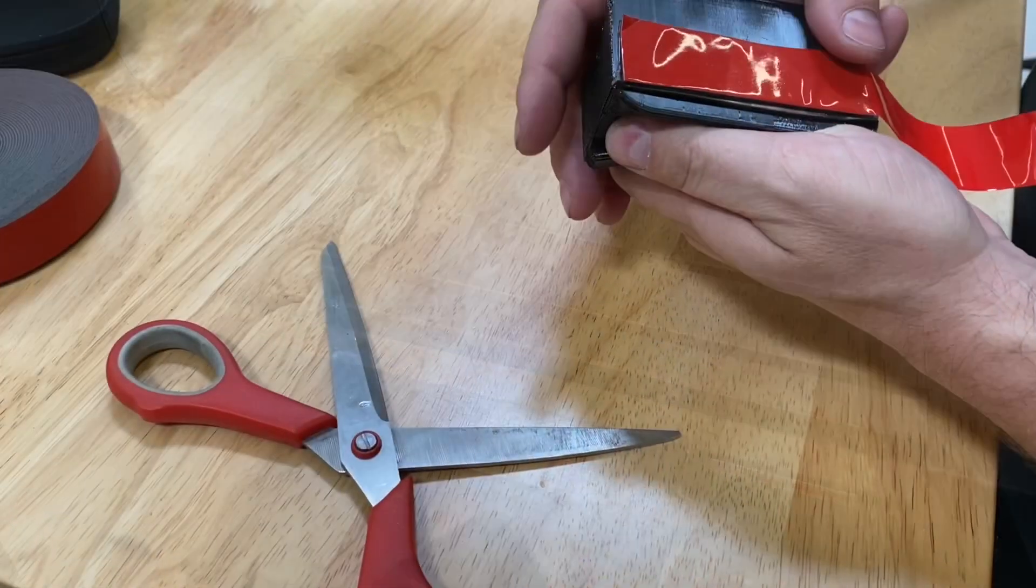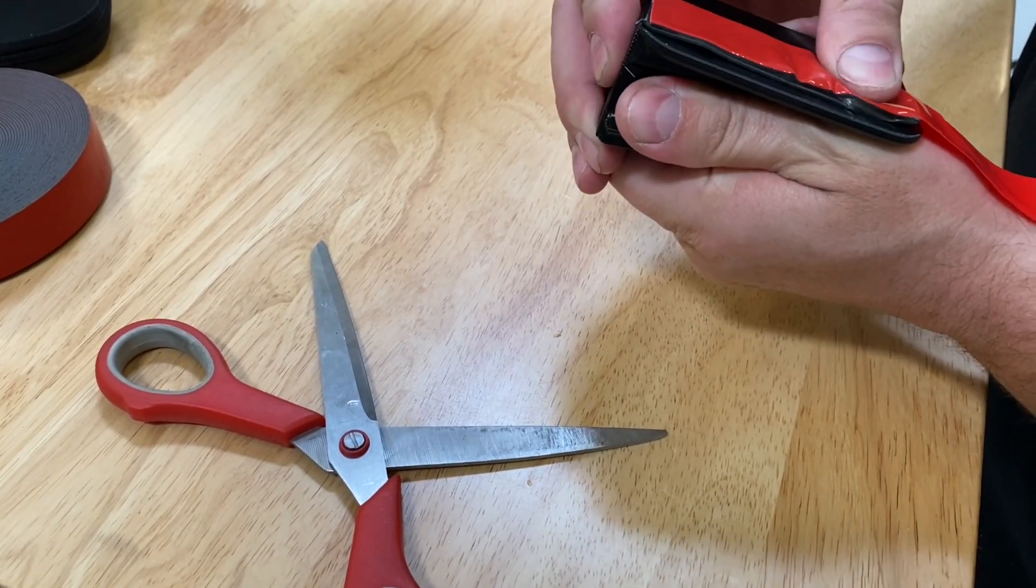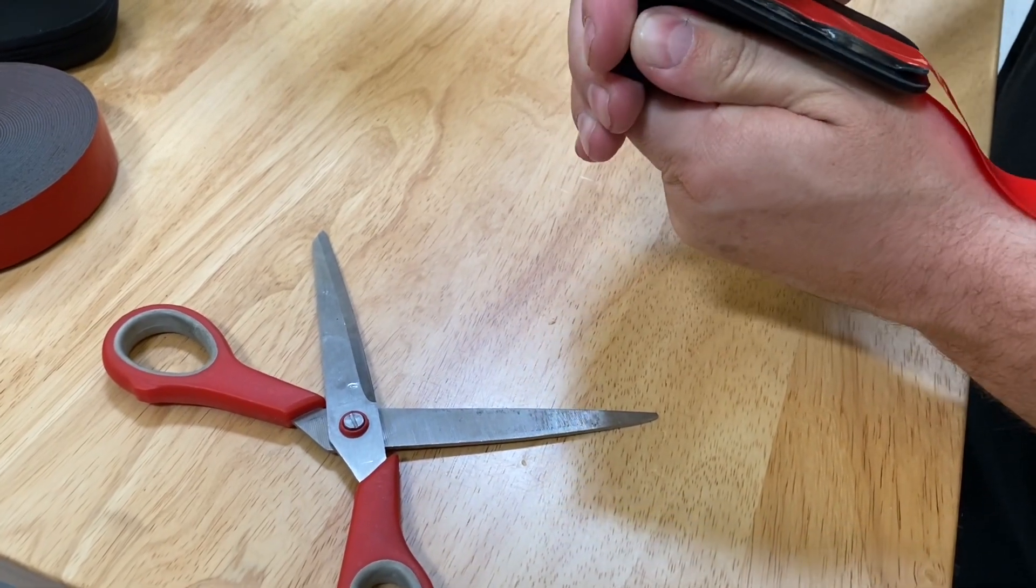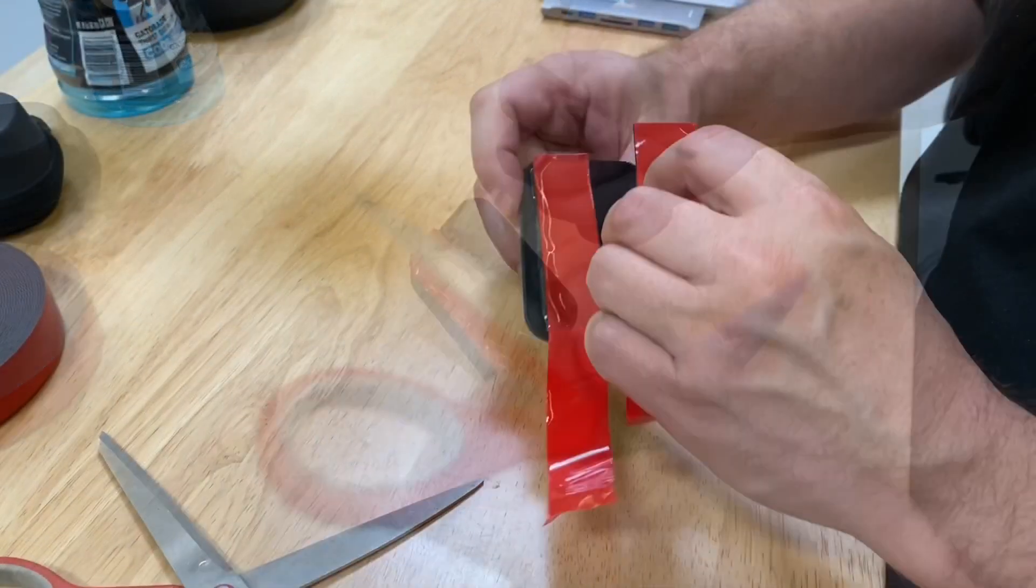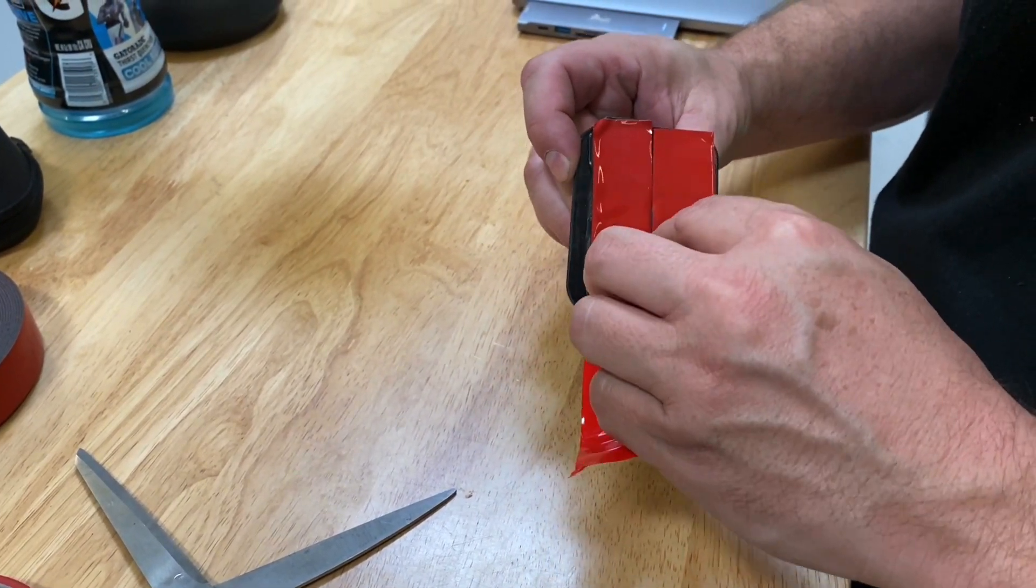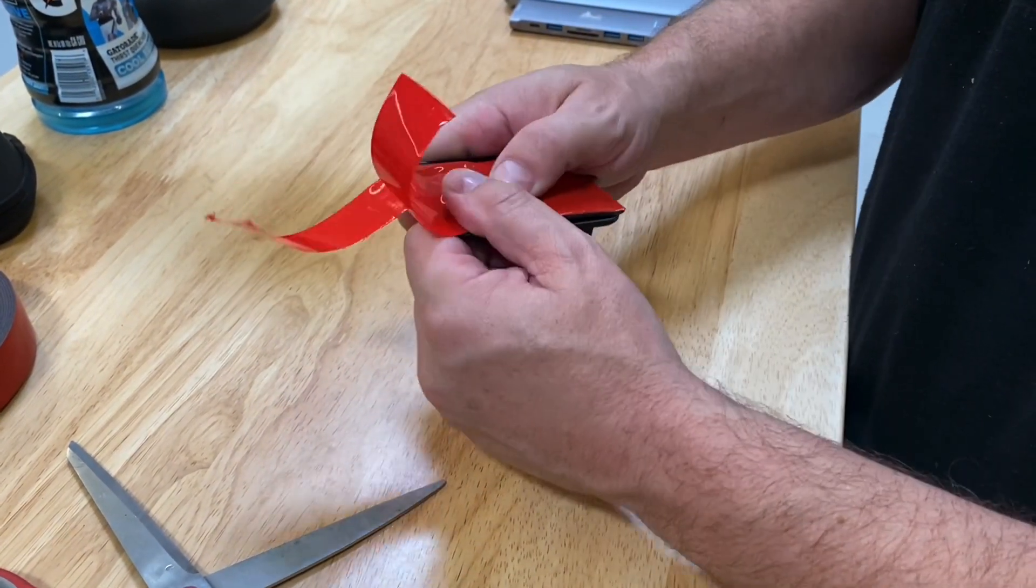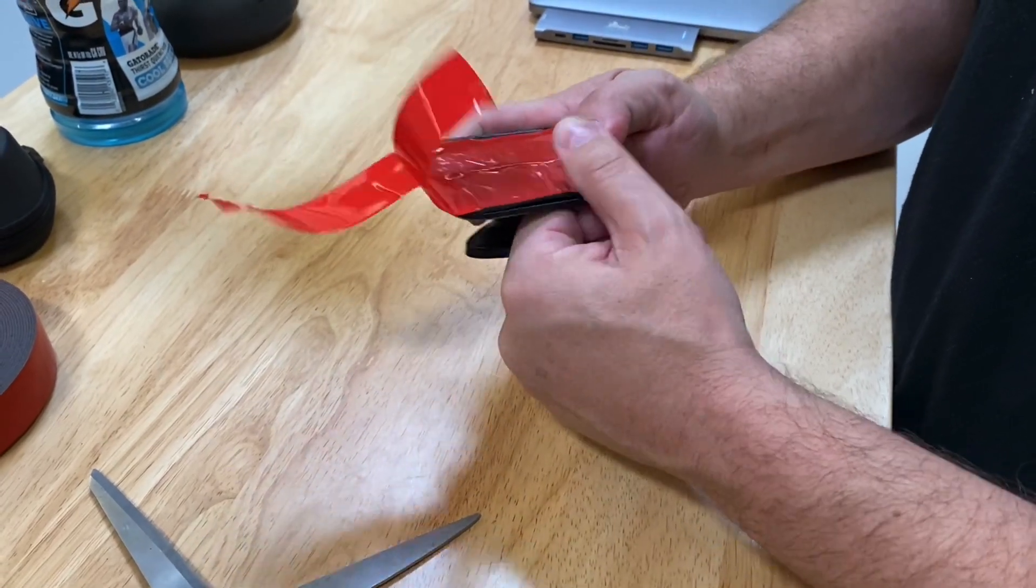And then we ran over to Home Depot and got some of that super durable. It's like 30 pounds per square inch double-sided tape. And I always use two layers. I just feel like it makes a better bond. And stuck it on there. And then you want to make sure that you press the stuff on really good because you really want a solid contact patch.